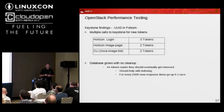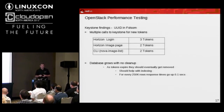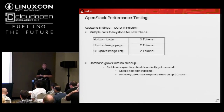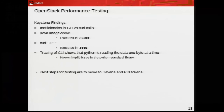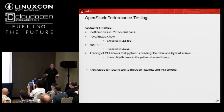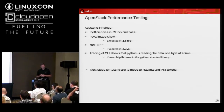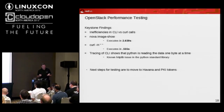One of the main things was there was no cleanup in the database. We were able to measure that as we kept inserting records, for every 250K rows, response time went up a tenth of a second. So with nothing pruning the database, you're going to run out of disk space and your indexing is going to be horrendous. We filed a bug to go fix that. The other thing was CLI versus curl calls — if you ran 'nova image show' it executed in 2.6 seconds roughly, but if you did the corresponding curl call it took half a second. We traced it and found Python was making a call to the httplib library — it's a known issue that's going to take a while to get fixed because it's so generic.